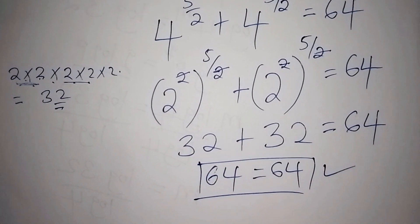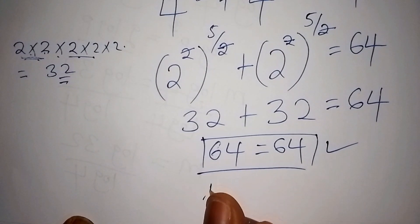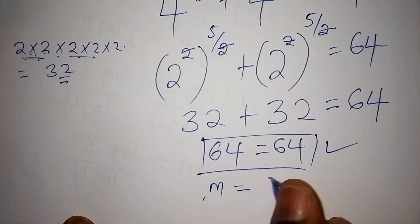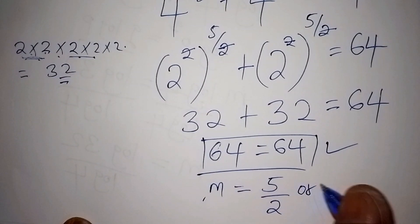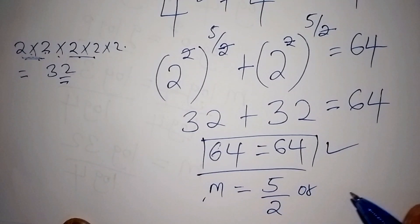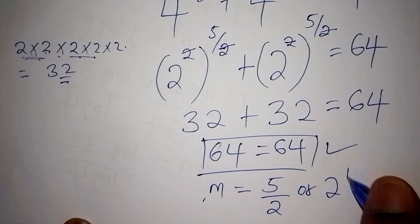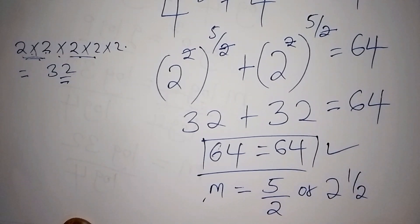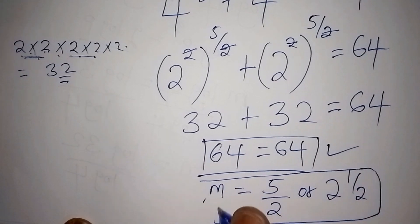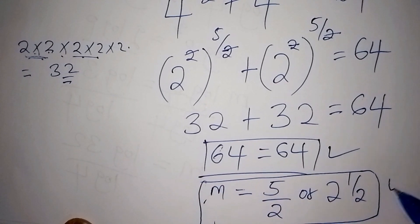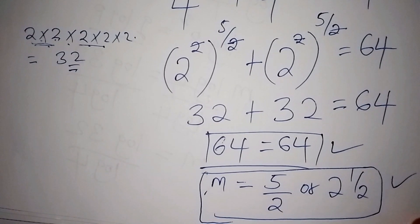Our value for m is equal to 5 over 2, or as a mixed number, 2 and a half. These are the correct answers. If you feel we worked this out correctly, please don't forget to subscribe to our channel.